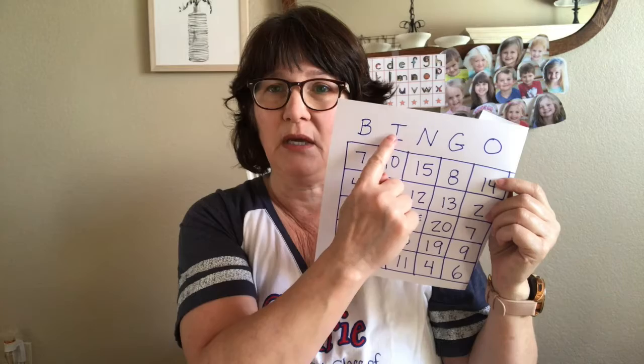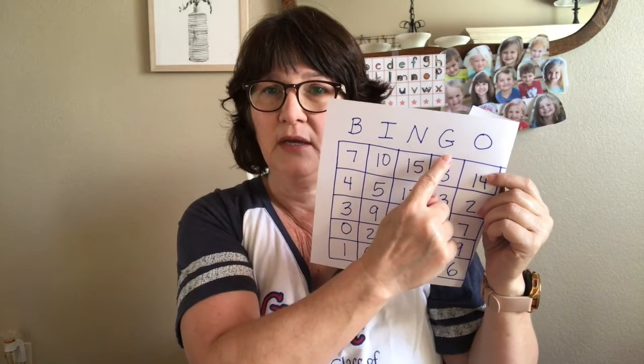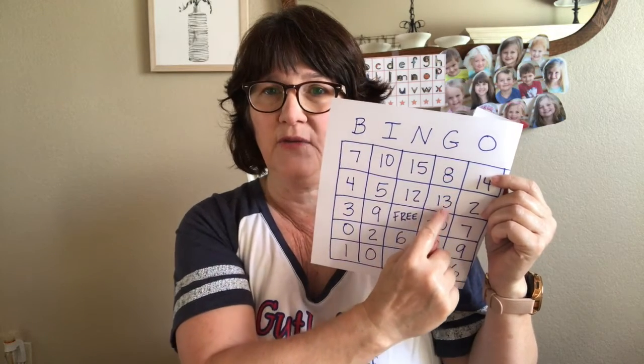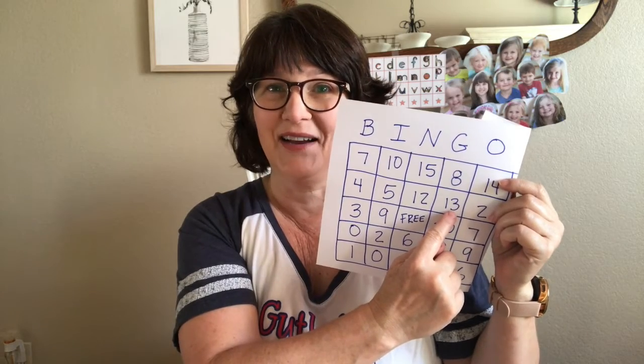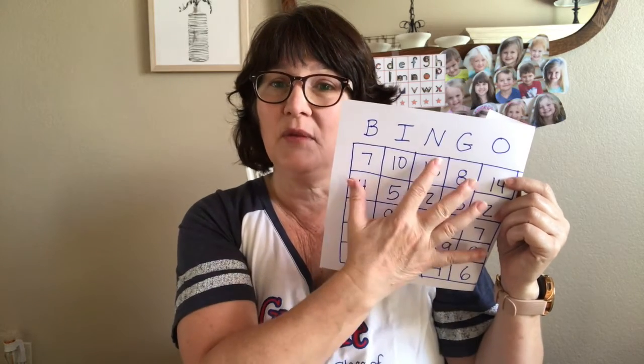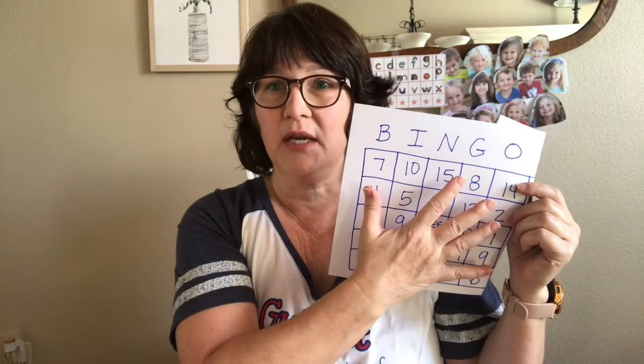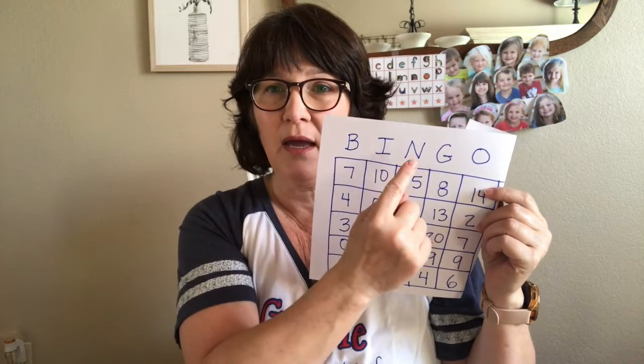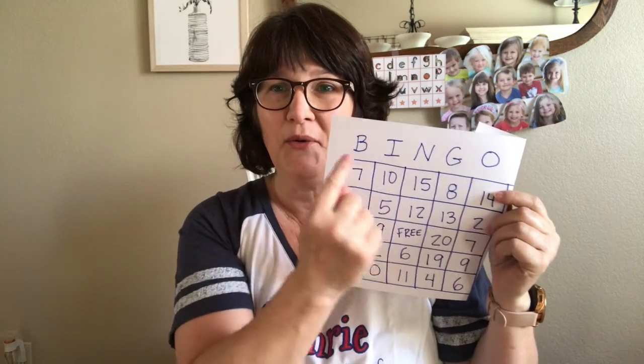The next one will be, say, G13. So you look — B, I, N, G — you go across and then down until you find 13, and there it is! You can make these in different orders, with different objects, and you will have a fun bingo game. B-I-N-G-O, B-I-N-G-O, B-I-N-G-O, and Bingo was his name-o!